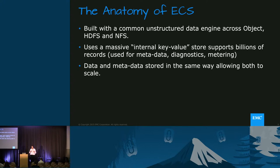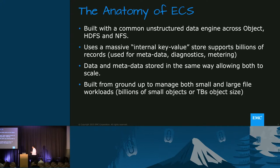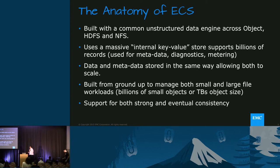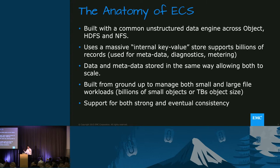We've had customers storing more than a few billion files. It's built from the ground up for both small and large files. Object systems in general are associated with large files, but in ECS we don't differentiate between both. You could go through tens of billions of files, or a large file could be in terabytes — a petabyte doesn't even make a difference. It supports both strong and eventual consistency. When ECS handles file, it does strong consistency; for object, it allows the option of eventual consistency as well.